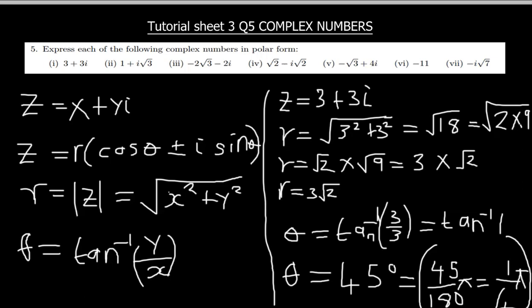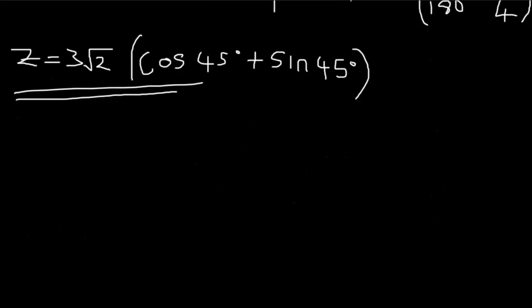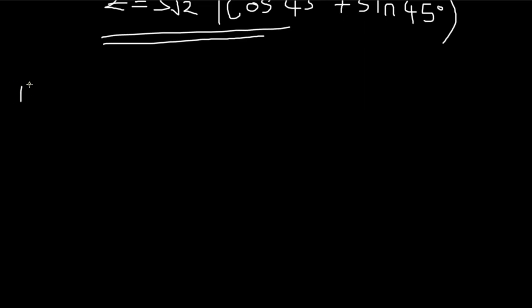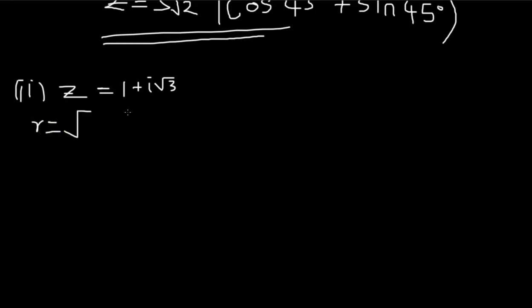We move on to question two: z = 1 + i√3. This one looks straightforward, but let's solve it anyway. So for question two, z = 1 + i√3. We start by finding r: r = √(x² + y²) = √(1² + (√3)²).